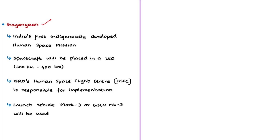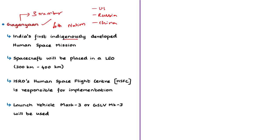Without data relay satellites, ISRO would have to create a large number of ground stations or hire them globally so that spacecraft would be visible all the time. Gaganyaan mission is the first human space mission indigenously developed by India. If successful, it will make India the fourth nation to launch a human spaceflight mission, after the United States, Russia, and China. The mission aims to send a three-member crew to space for five to seven days, with the spacecraft placed in low earth orbit at a height of 300 to 400 kilometers.